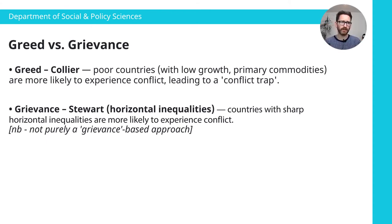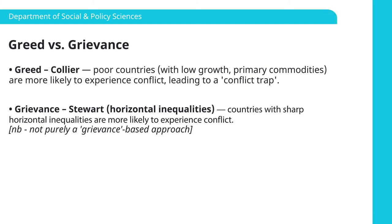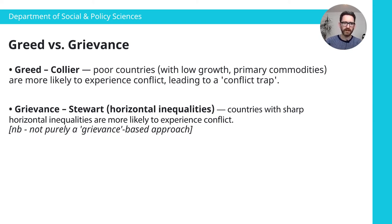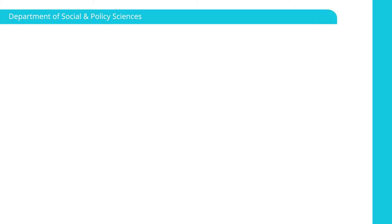These social lines could, for example, be along ethnic lines or along religious lines — so for instance in Sri Lanka there are horizontal inequalities between groups. Broadly, Stewart's argument is that in order to understand which countries are likely to experience conflict, the key factor to look at is horizontal inequalities, not simply, as Collier would argue, the question of whether or not this is a poor country with low rates of growth that has primary commodities.